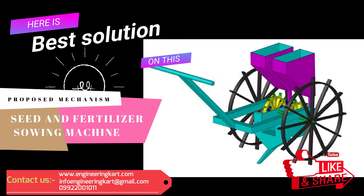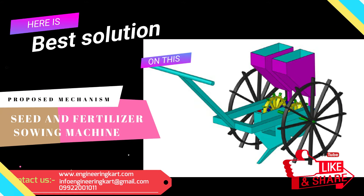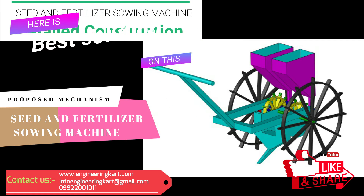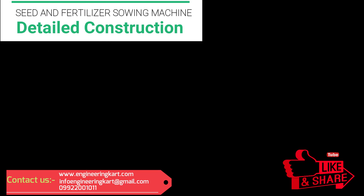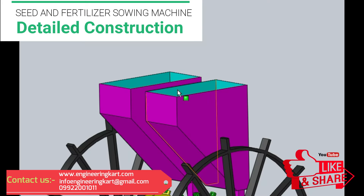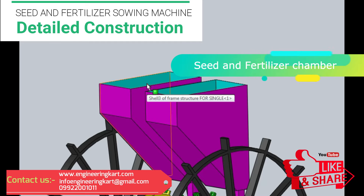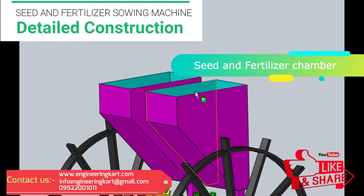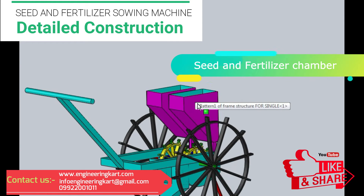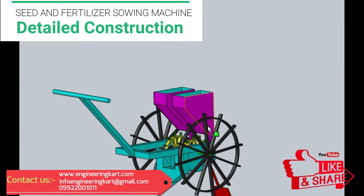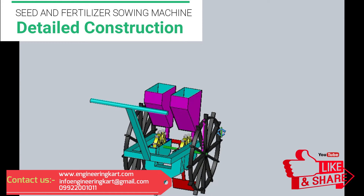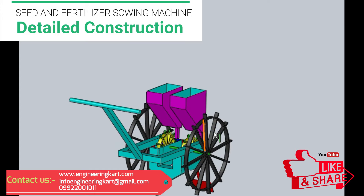So to eliminate these problems, a proper machine is required. Engineering Cart team presents the best solution to these problems. In the developed model, there are two storage chambers provided. The farmer can choose the chamber for seed or for fertilizer according to his requirement.